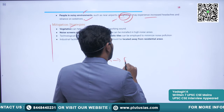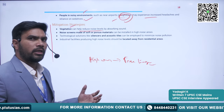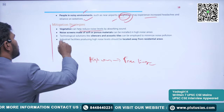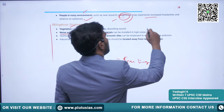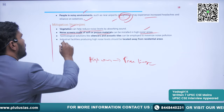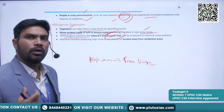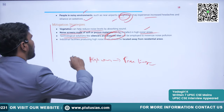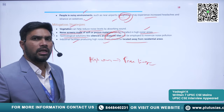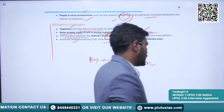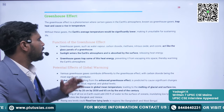Mitigation strategies for noise pollution: vegetation can help reduce noise levels by absorbing sound — this is why tree lines are being developed along highways. Noise screens made of soft or porous materials can be installed in high-noise areas. Technological solutions such as silencers and acoustic tiles can also reduce noise pollution. Industrial facilities producing high noise levels should be located away from residential areas.